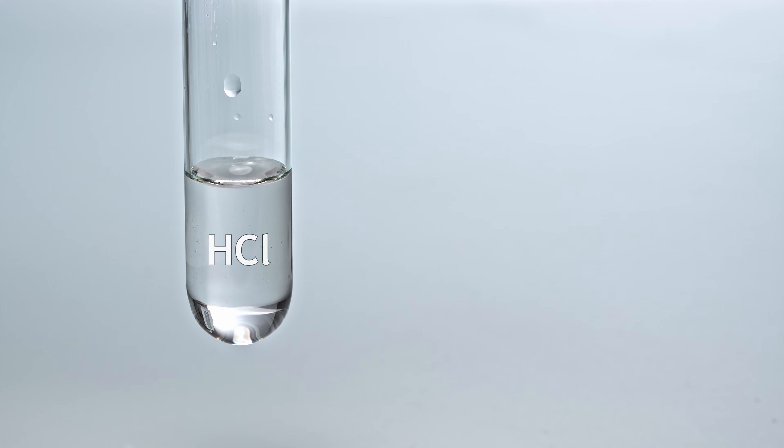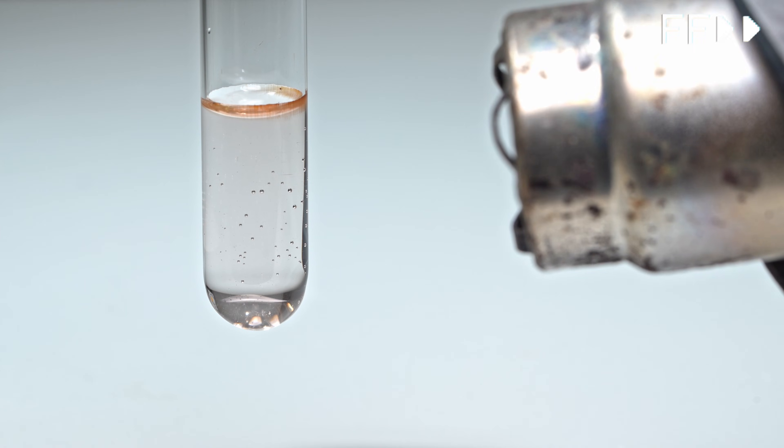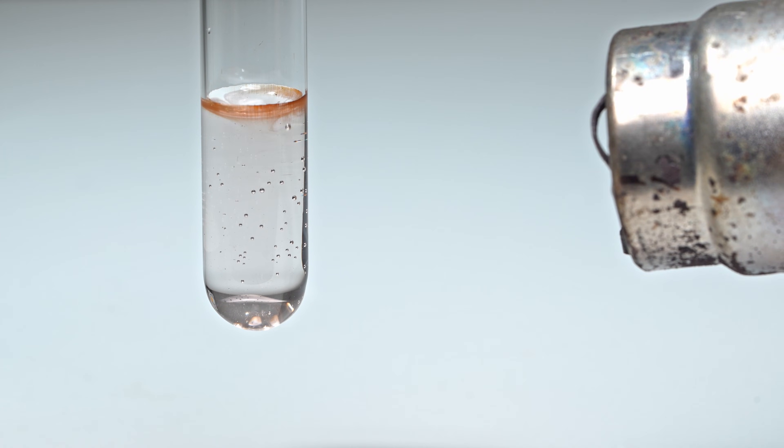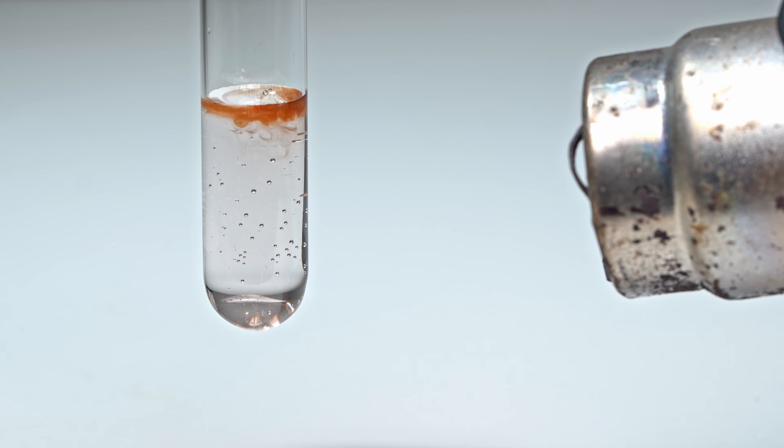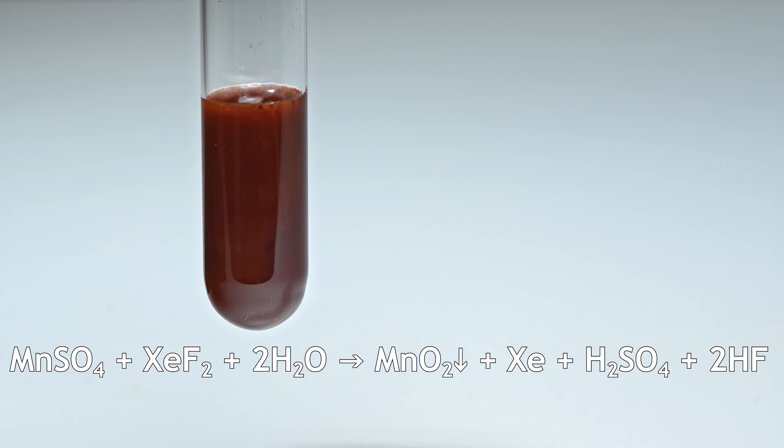Solid xenon difluoride immediately releases chlorine gas from hydrochloric acid. I also tested, if adding xenon difluoride to an acidified manganese sulfate solution would produce permanganate ions. But after I mixed the two solutions and gently heated them, only a brown precipitate of manganese dioxide was formed. Although it's possible that a mixture of ions forms here. In any case, I did several of these experiments and never managed to get the purple color characteristic of permanganate ions.